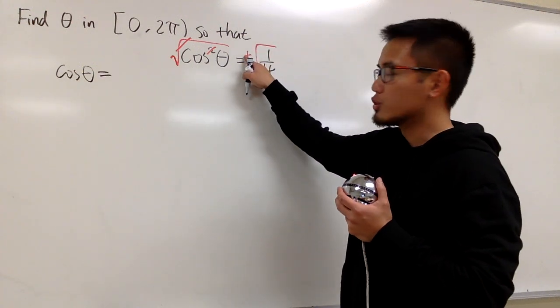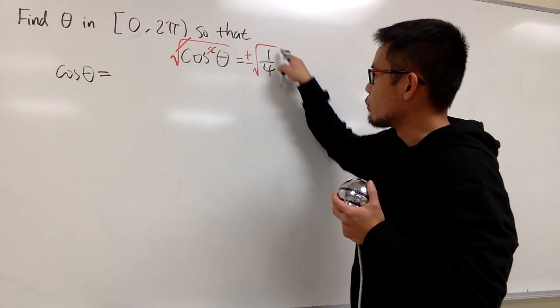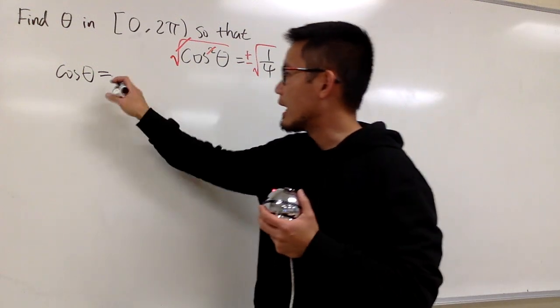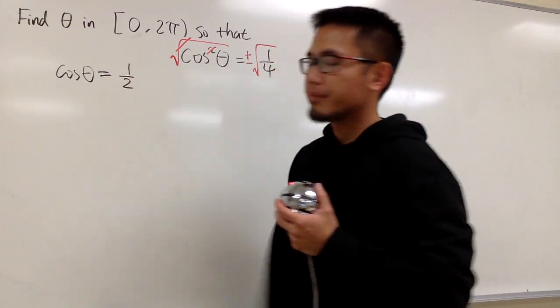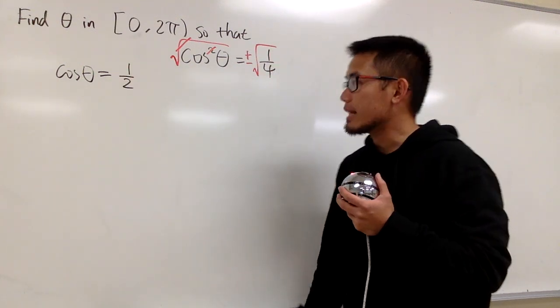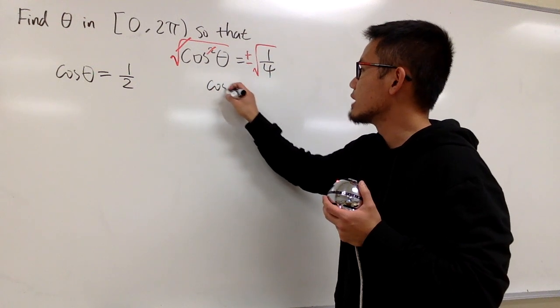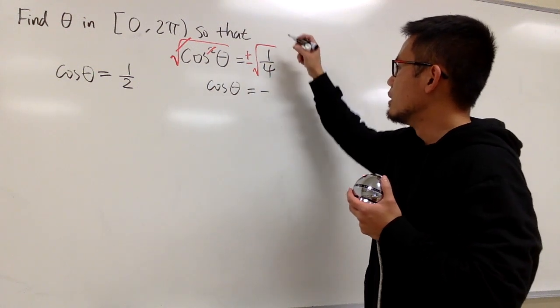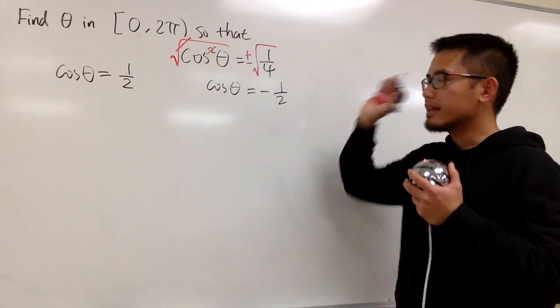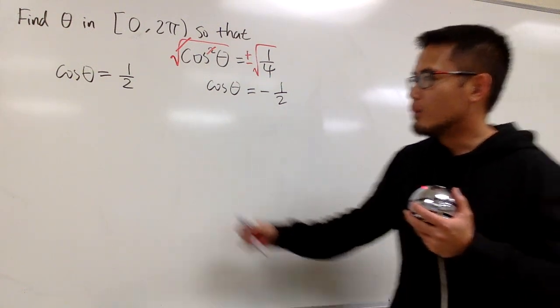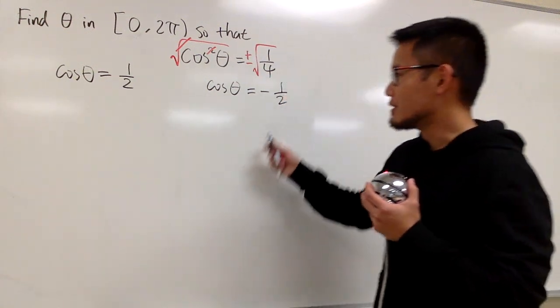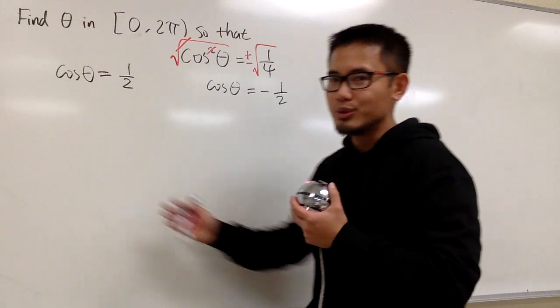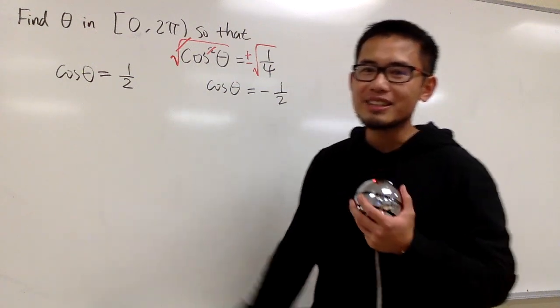the positive version of the square root of 1 over 4, which is the same as positive 1 half. And the other situation is that we have to put down cosine theta to be the negative version of 1 over 2. We should be able to solve that all together.